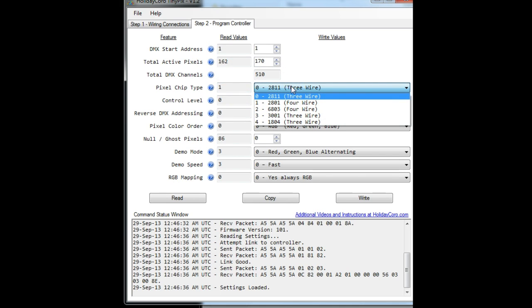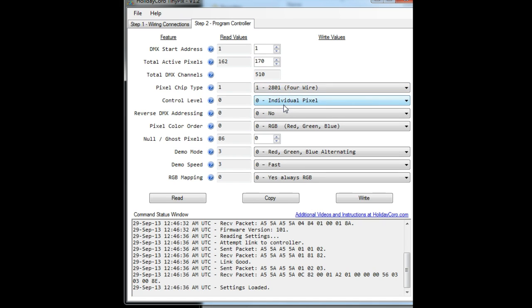In this particular example, we will be testing 2801, that's four wire. So you want to make sure that your controller is properly set up for the type of pixels that you'll be using.